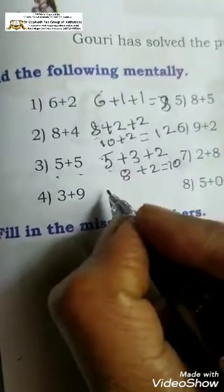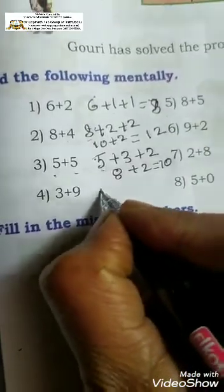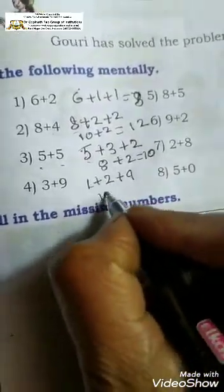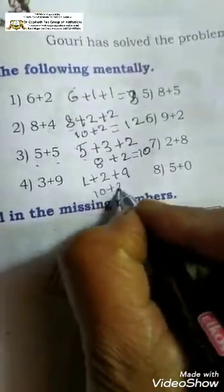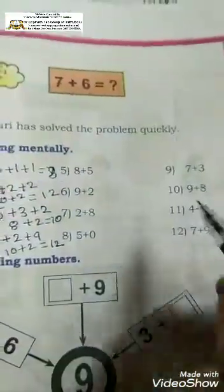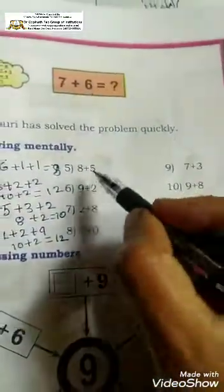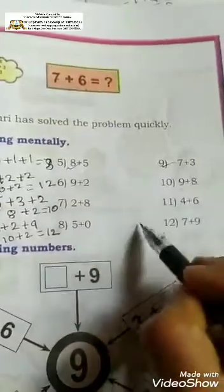3 plus 9: we can write it as 1 plus 2 plus 9. 9 plus 1 is 10, 10 plus 2 is 12. This can be done. You can even try all these sums by doing yourself, children.